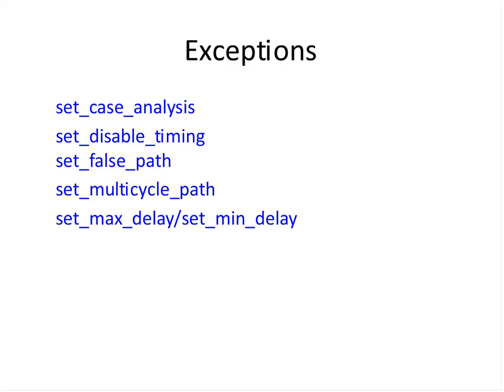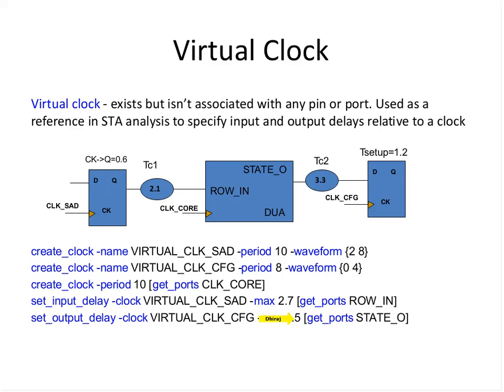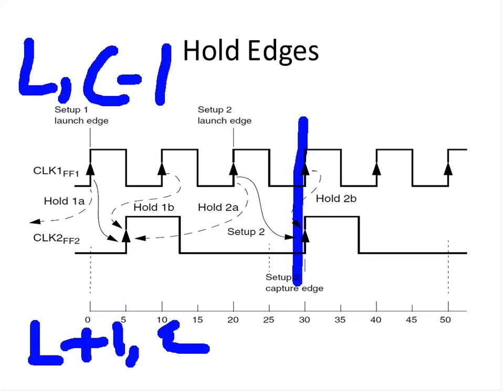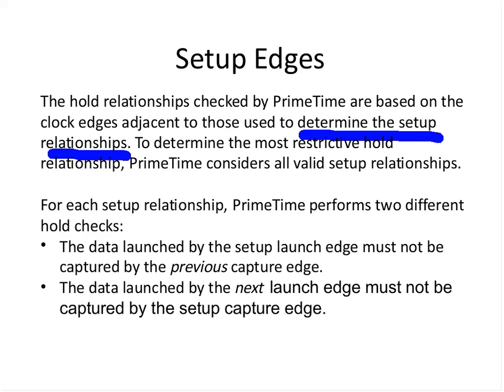A virtual clock is something that does not have any port in the design — it is kind of a floating clock and is mostly used to define input and output constraints. There are two virtual clocks defined — virtual_clock_operating and virtual_clock_clear — each with some period. We create a regular clock and can use these virtual clocks to define input delays or output delays on some ports.